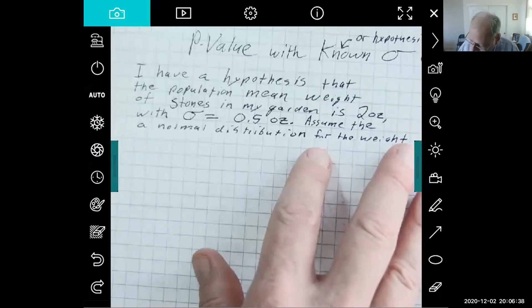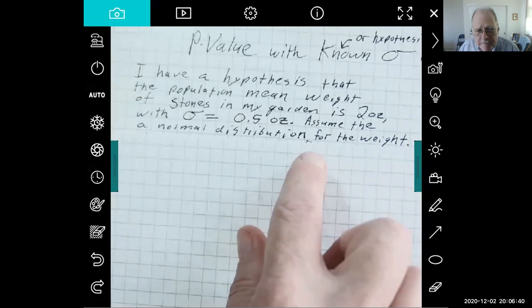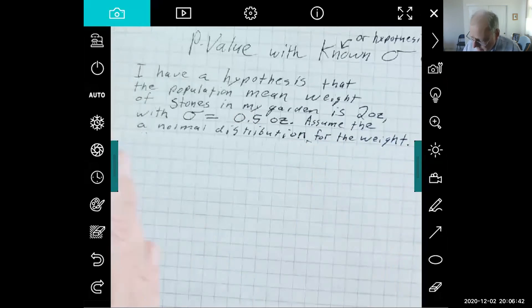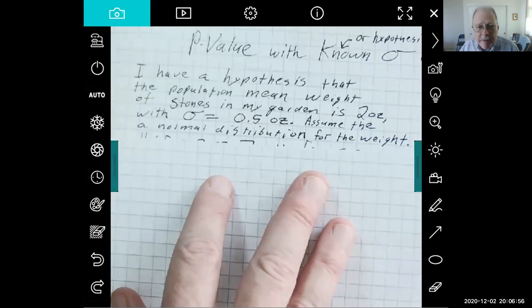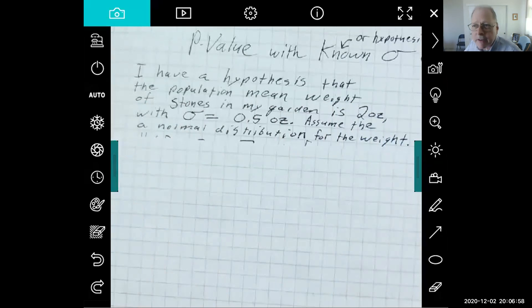So I'm going to assume that the weights are normally distributed. So you can't use these methods unless either the variable, the weight here, has a normal distribution or your sample size is large. And so in setting up the problem, I'm going to assume a normal distribution, and then we don't need a big sample.